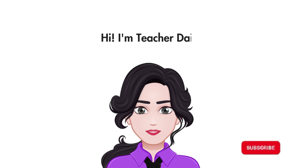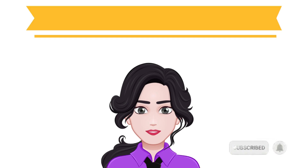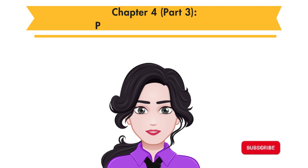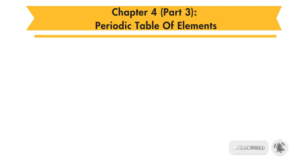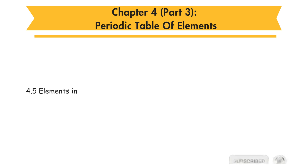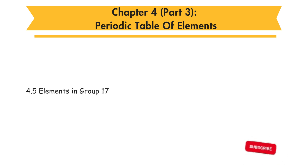Hi, I am Teacher Daisy. Now, let's learn Form 4 Chemistry Chapter 4, Periodic Table of Elements Part 3. In this part, you will learn 4.5 Elements in Group 17.